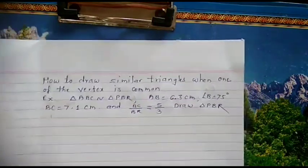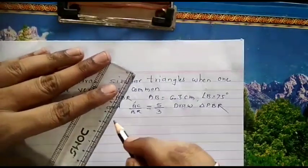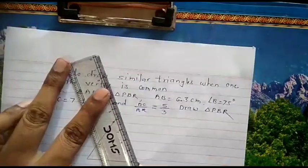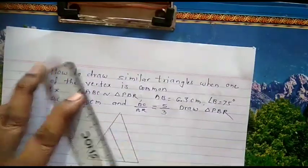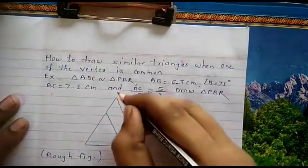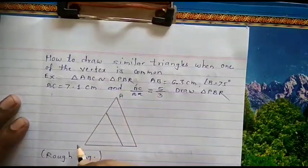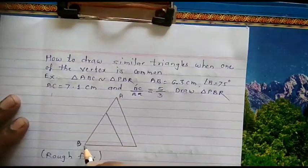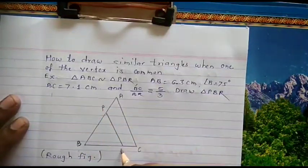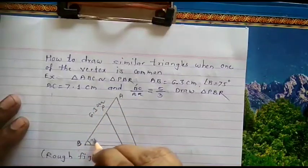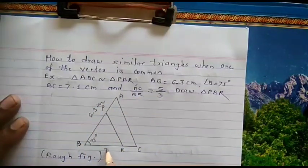First, we will draw a rough figure. Triangle ABC is the larger triangle and triangle PBR is the smaller. The common vertex should always lie on the left-hand side. We are given two sides: AB is 6.3 cm, angle B is 75 degrees, and BC is 7.1 cm.